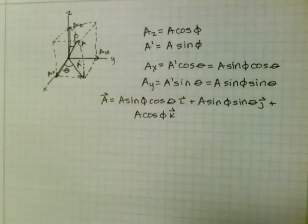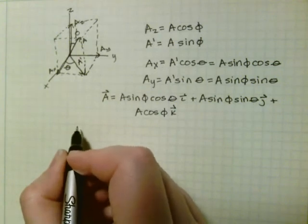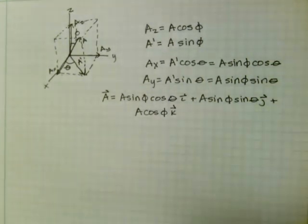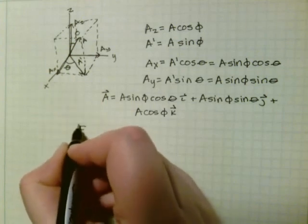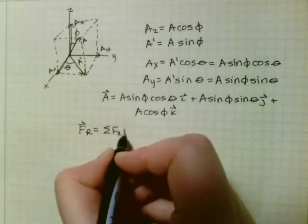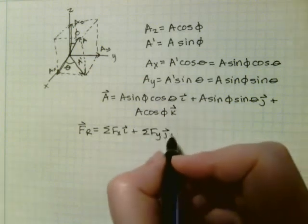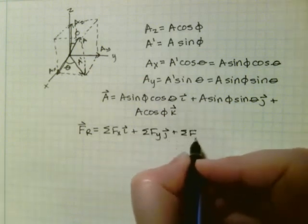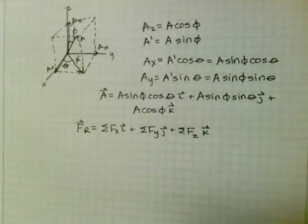And finally, just like before, we can combine the x components, combine the y components, and combine the z components to find the resultant vector if we're adding them. So if we add the vectors, we'd get that the resultant force is equal to the sum of all the x components in the i direction plus the sum of all the y components in the j and the sum of all the z components in the k direction. And there will be an example of that to follow.